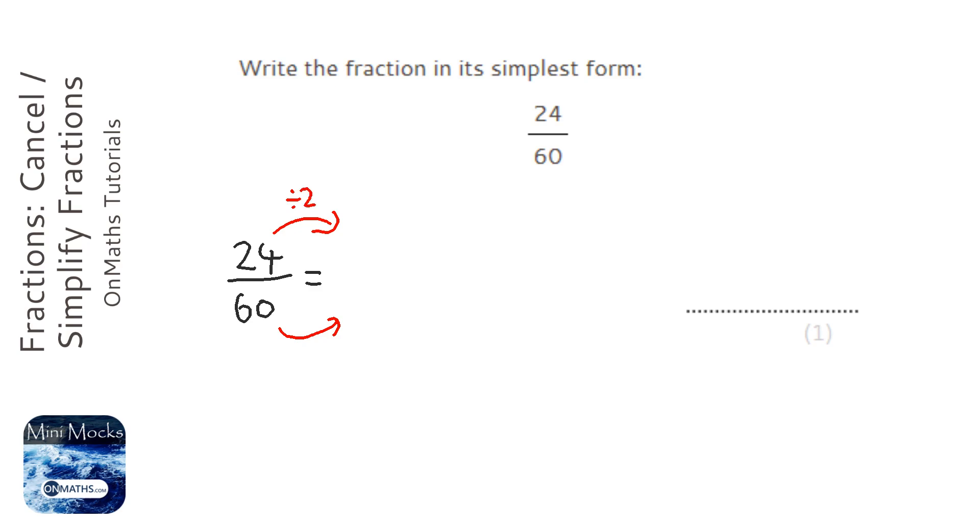Now they're both even numbers, so what I can do is halve top and bottom. So that becomes 12 over 30.